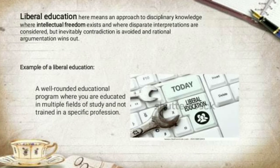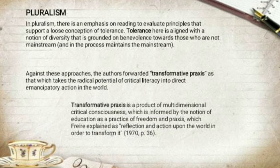Liberal education means an approach to disciplinary knowledge where intellectual freedom exists and where disparate interpretations are considered, but inevitably contradiction is avoided and rational argumentation wins out. An example is a well-rounded educational program where you are educated in multiple fields of study and not trained in a specific profession. In pluralism, there is an emphasis on reading to evaluate principles that support a loose conception of tolerance. Tolerance here is aligned with a notion of diversity that is grounded on benevolence toward those who are not mainstream, and in the process maintains the mainstream.